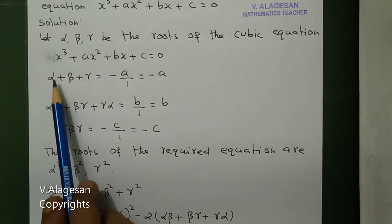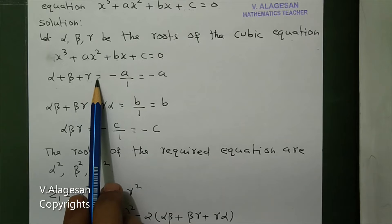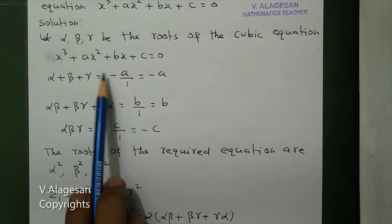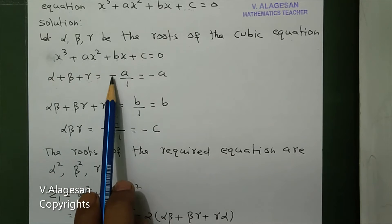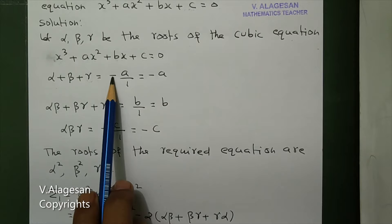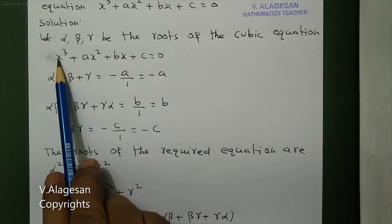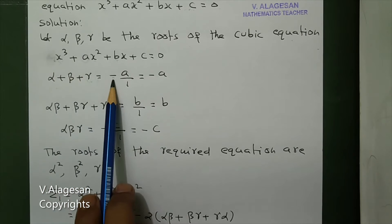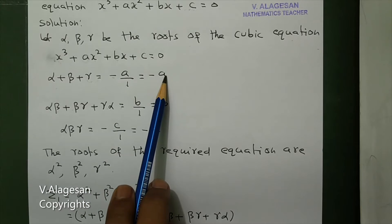First, alpha + beta + gamma = minus a by 1, which is minus the coefficient of x² divided by the coefficient of x³. So alpha + beta + gamma = -a.